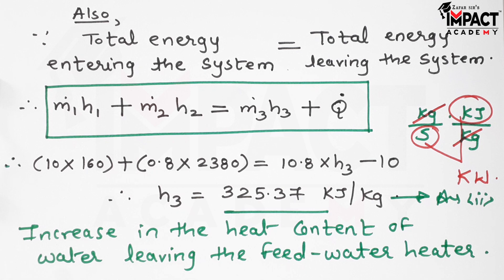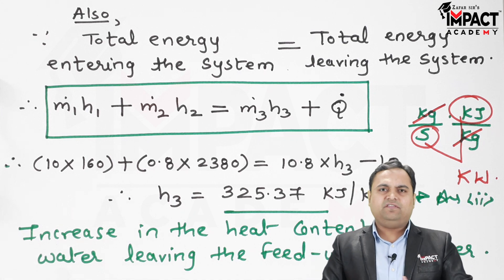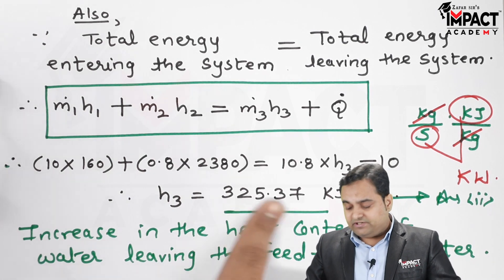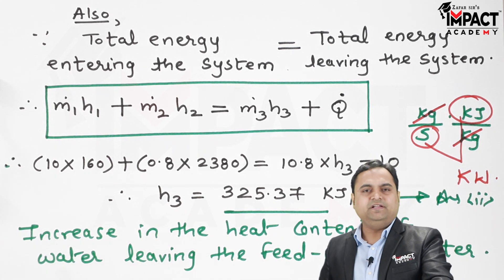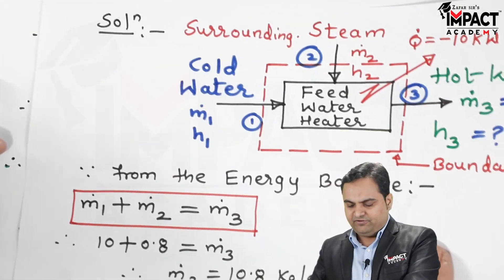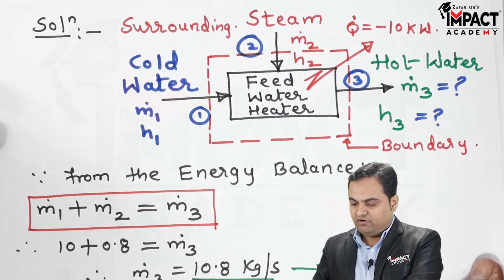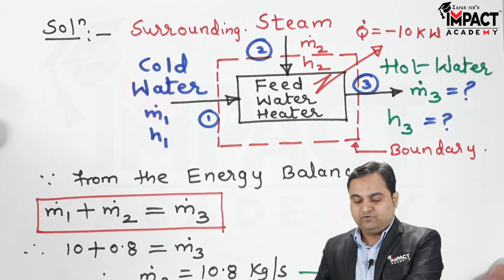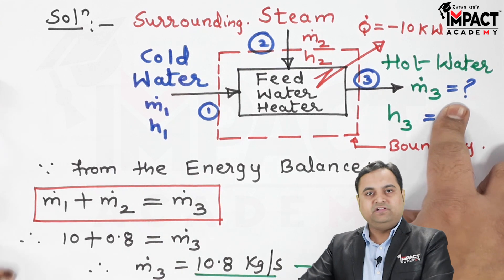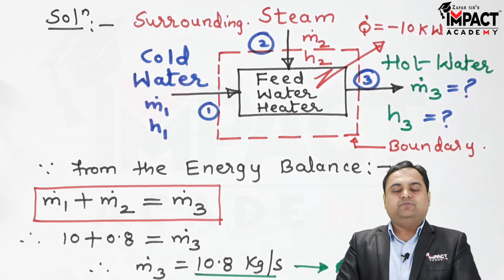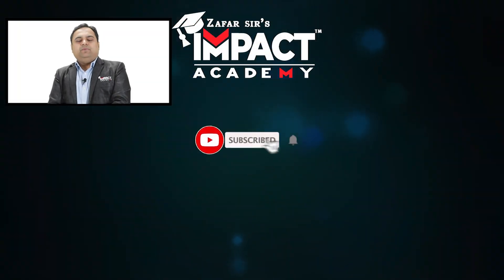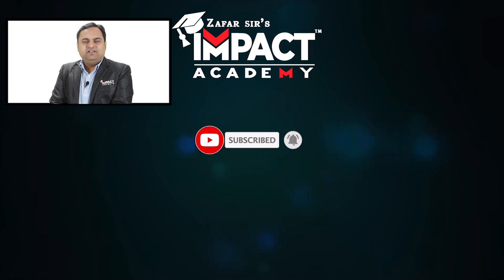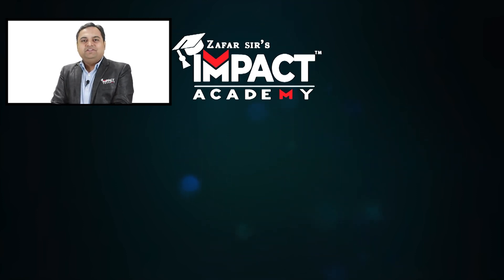In summary, for a feed water heater of direct mixing type, when water and steam mix, the hot water leaving has a greater enthalpy compared to the inlet values. We have found both answers: the mass flow rate of hot water leaving the system is 10.8 kg/s and its specific enthalpy is 325.37 kJ/kg. That was the problem based on SFEE. If you found the video helpful, please like, share, comment, and subscribe.